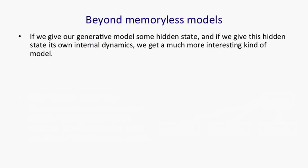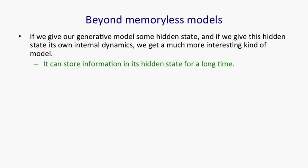Memoryless models are only one subclass of models that can be used for sequences. We can think about ways of generating sequences, and one very natural way to generate a sequence is to have a model that has some hidden state which has its own internal dynamics. So the hidden state evolves according to its internal dynamics, and the hidden state also produces observations, and we get to see those observations. That's a much more interesting kind of model — it can store information in its hidden state for a long time. Unlike the memoryless models, there's no simple bound to how far we have to look back before we can be sure it's not affecting things.